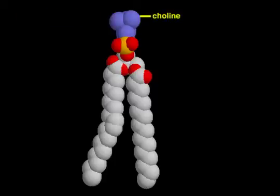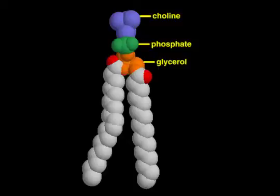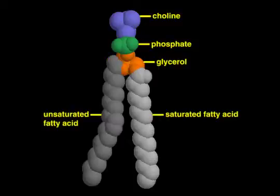Phospholipids contain a head group — choline in this case — that is attached via a phosphate group to a three-carbon glycerol backbone. Two fatty acid tails are attached to the remaining two carbons of the glycerol.